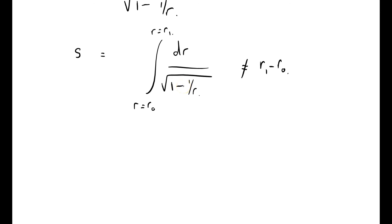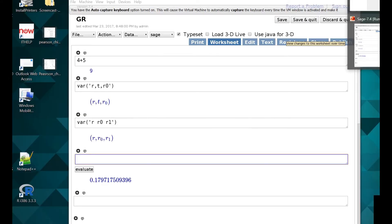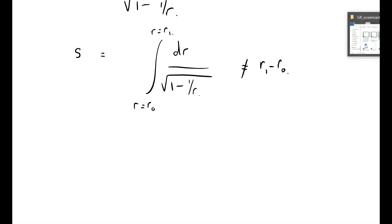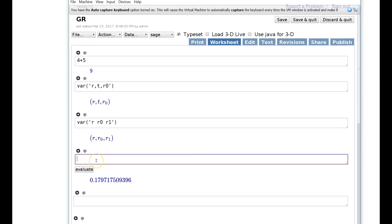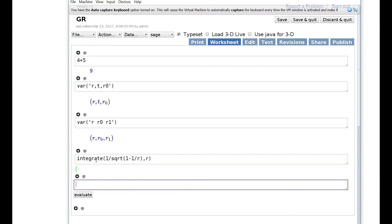I've got a Sage set up here, and we'll do it right now. So what I want to do is I want to integrate 1 over the square root of 1 minus 1 over r, with respect to r. And I think shift enter does the integration.